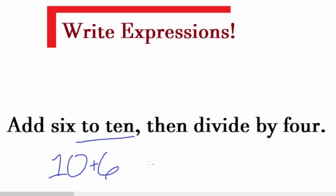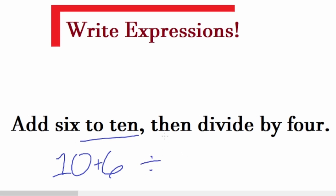That word 'then' tells us it comes after. So 10 plus 6 divided by 4. Now normally, if you see addition and division, you would do the division before, and that's going to give us a different answer — it's actually incorrect. We do this section first: Add 6 to 10, and to show that, we mark it with parentheses. If you need more help with parentheses, there's a full video link in the description. 10 plus 6 is coming first, then we divide by 4.